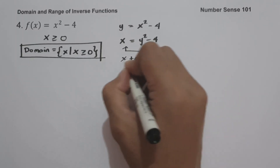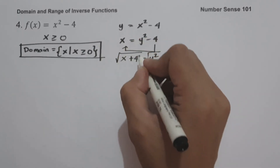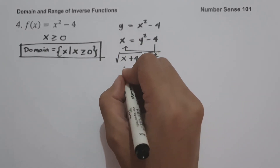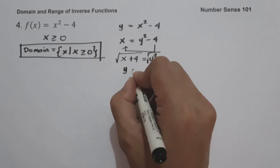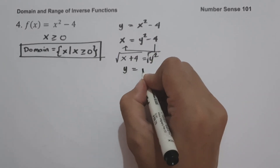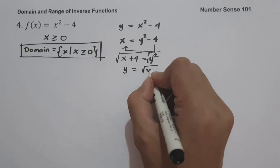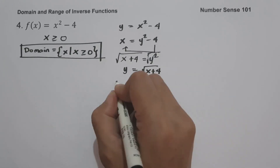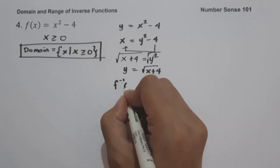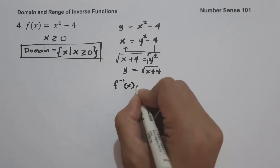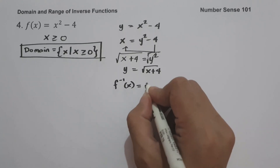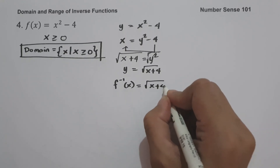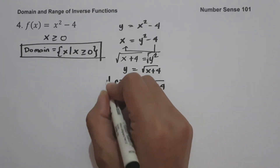Squaring both sides of the equation and simplifying gives y equals the square root of x plus 4. This will be the inverse of the given function.